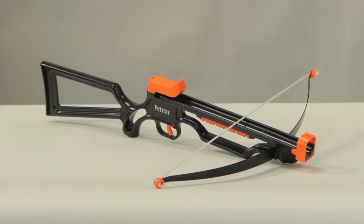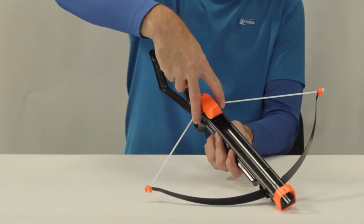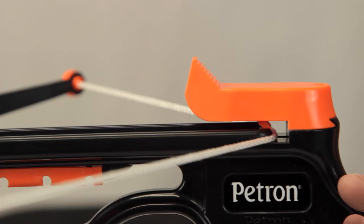Now let's see how to charge, load, and shoot the bow. To charge the bow, draw the string back with two fingers, one either side of the bow body, so that the string drops into the slot at the back of the barrel.